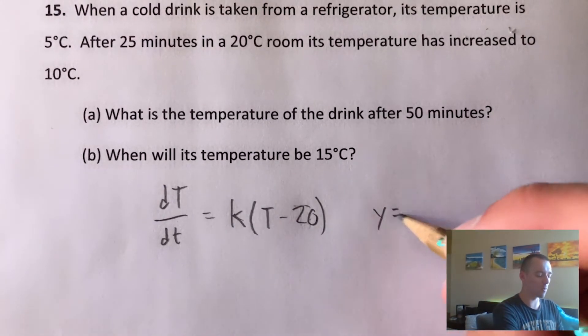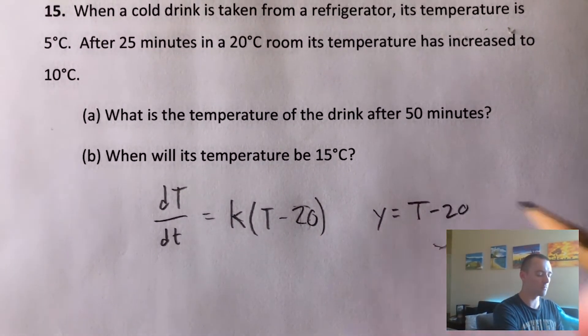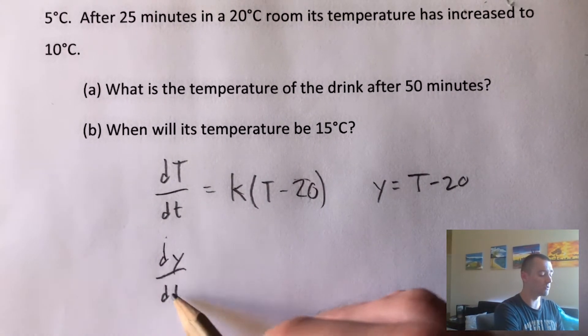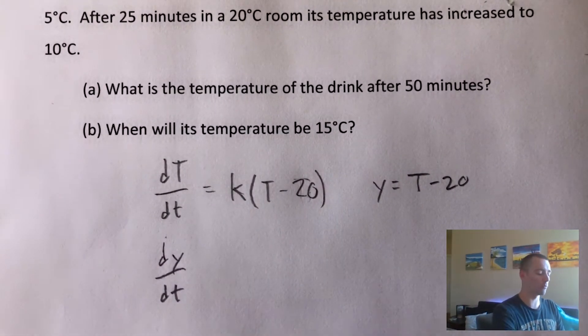So what we can do is just take whatever's in the parentheses here, and we'll call that y. So we'll say y equals T minus 20. And then what we can do is rewrite this as a differential equation in terms of y.